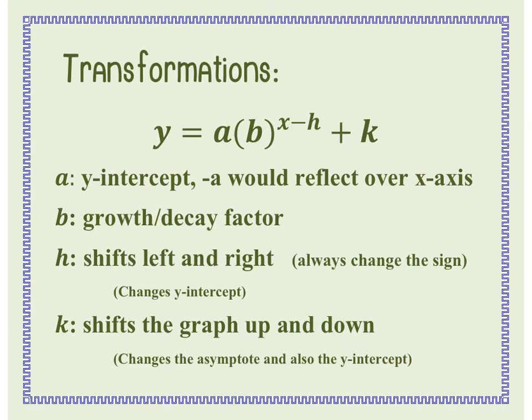This slide has a lot of information. The general form is a times b raised to the (x minus h) plus k. The value 'a' is the number in front of your parentheses. 'a' tells you the y-intercept, and a negative 'a' reflects the graph over the x-axis. But be careful — it is only the y-intercept if there are no transformations of h and k.